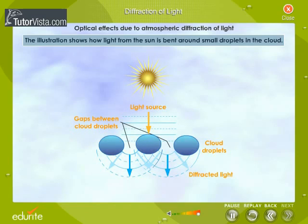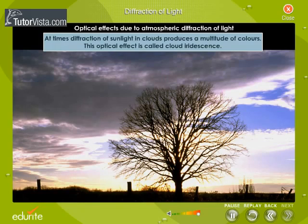The illustration shows how light from the Sun is bent around small droplets in the cloud. At times, diffraction of sunlight in clouds produces a multitude of colors. This optical effect is called cloud iridescence.